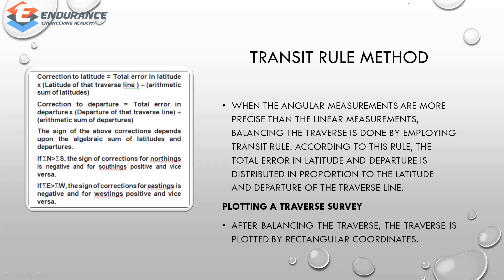After balancing the traverse, the traverse is plotted using rectangular coordinates. For the transit method, the correction to latitude equals the total error in latitude multiplied by the latitude of the traverse line, divided by the arithmetic sum of latitudes. The correction to departure equals the total error in departure multiplied by the departure of the traverse line, divided by the arithmetic sum of latitudes and departures.